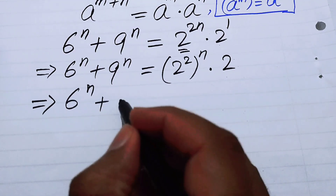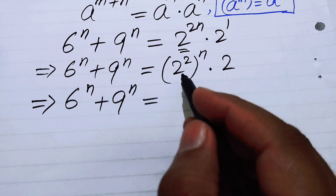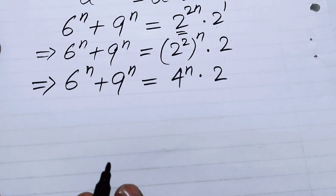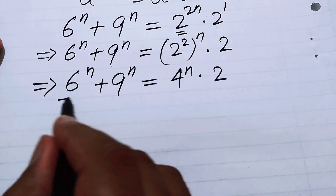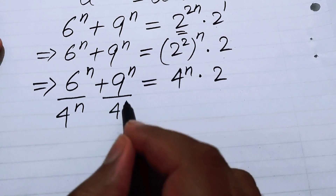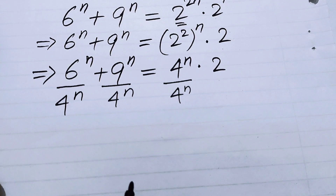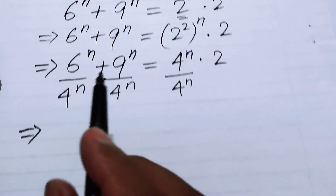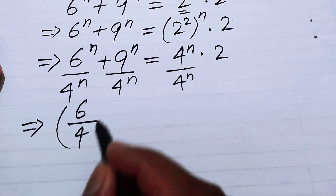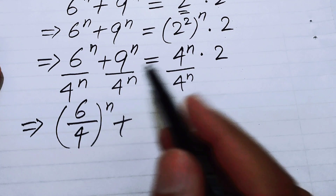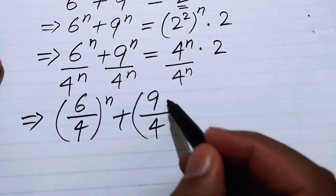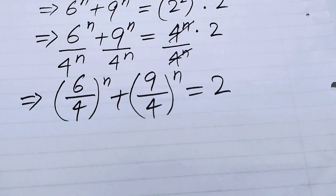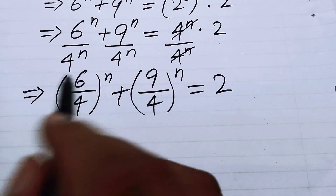Since 2 squared equals 4, we have 6 to the power of n plus 9 to the power of n equals 4 to the power of n times 2. After this, we divide both sides by 4 to the power of n. Combining the exponents, we write 6 over 4 to the power of n plus 9 over 4 to the power of n equals 2.